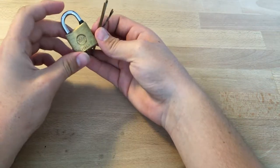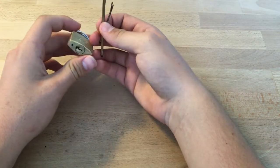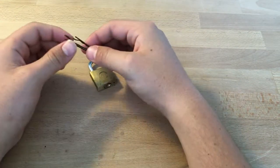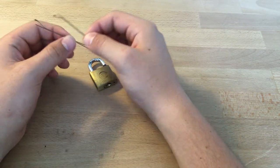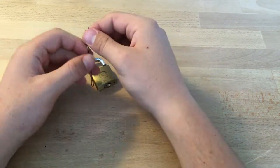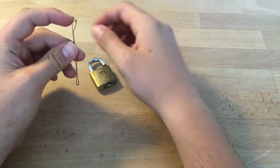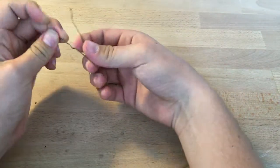I'll show you how to pick this Yale lock, a small one, really easy. So what you need is two bobby pins, one small and one large, and you want to cut the ends of both of them. So to pick the lock...